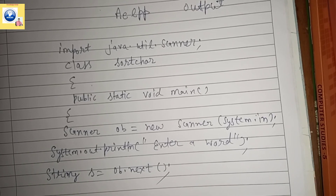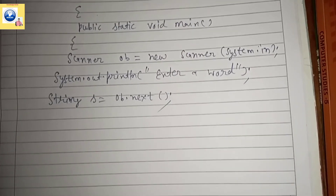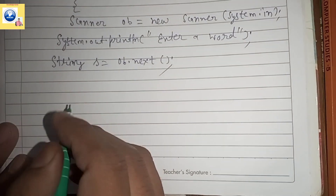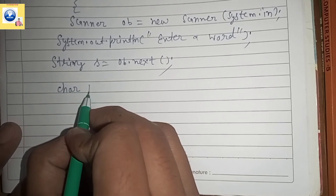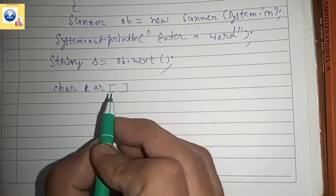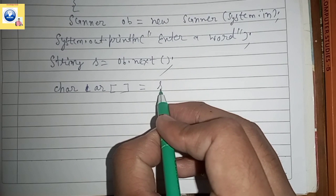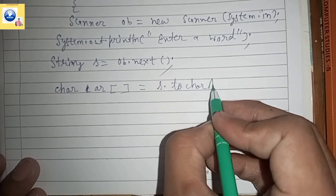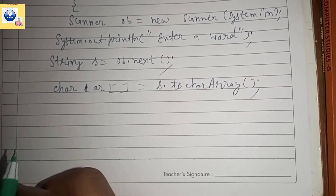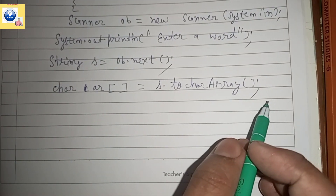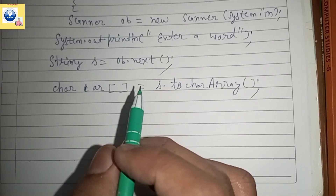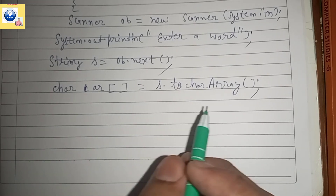Now our next task is to convert this string into a character array. So we declare 'char[] ar = s.toCharArray()'. The toCharArray() method converts a string into a character array. So now whatever input was taken has been converted into a character array. We will use the bubble sort method to sort the letters into alphabetical order.